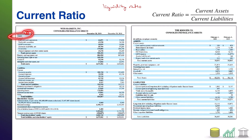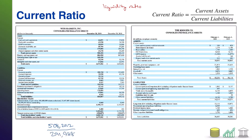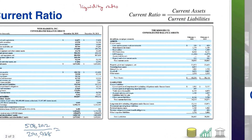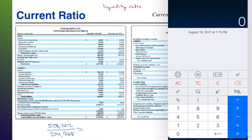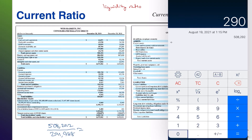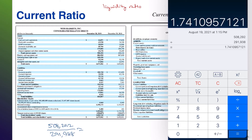If we look at the top of the balance sheet, we have assets, and the first section is current assets. For Weiss Markets, total current assets was 508,292. I'm just going to use that first year, 2019 — so 508,292. Their current liabilities — looking at the liabilities section, the very first section — total current liabilities is 291,938. That comes out to approximately 1.74.